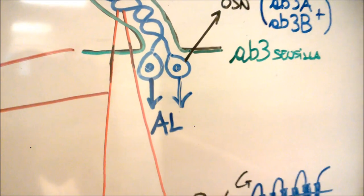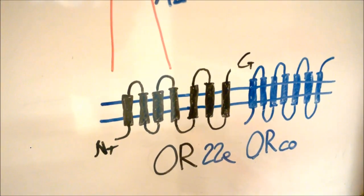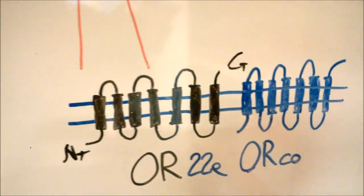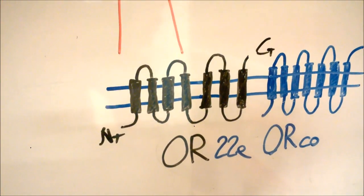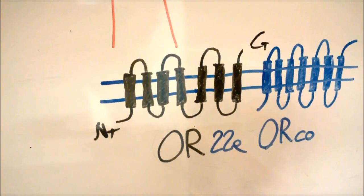Generally, each olfactory sensory neuron expresses, together with a core receptor, only one type of olfactory receptor. For example, AB3A expresses OR22A.